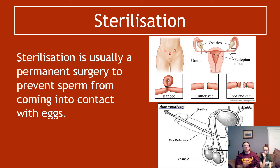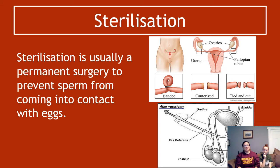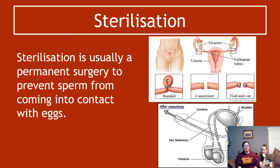Male sterilisation — you can see in the diagram — involves cutting the sperm duct. If you cut the sperm duct, the sperm cannot travel up through it and out through the urethra, preventing them coming into contact with the ova. That's what's generally talked about on TV when people talk about getting a vasectomy — males getting their tubes cut.